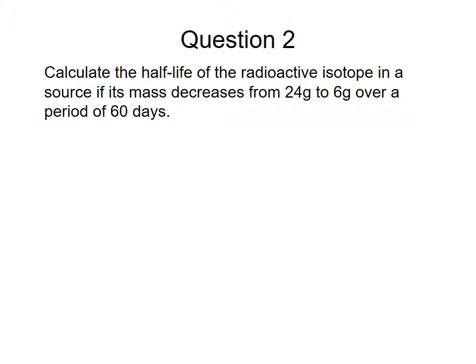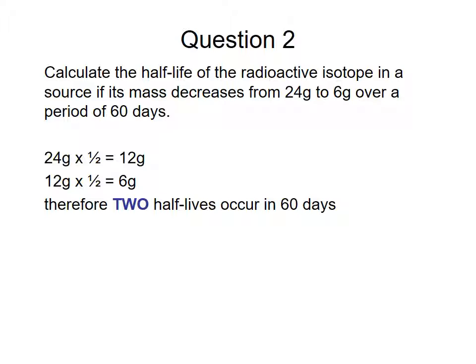Question two. Calculate the half-life of a radioactive isotope in the source if its mass decreases from 24 to 6 grams over a period of 60 days. So again, pause the video and see if you get the correct answer. So 24 grams divided by 2 is 12 grams. Divide by 2 again, 6 grams. Two half-lives occur in 60 days. So therefore, the half-life must be half of that, 30 days.